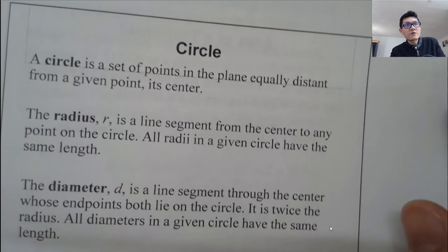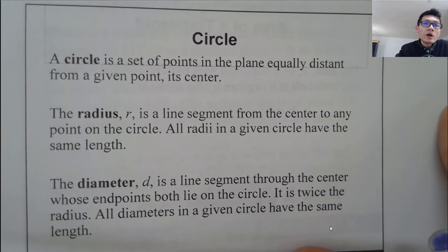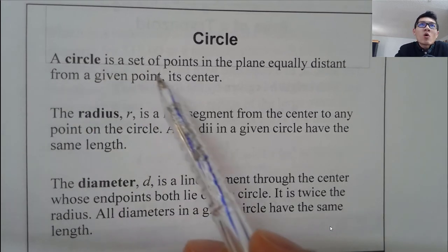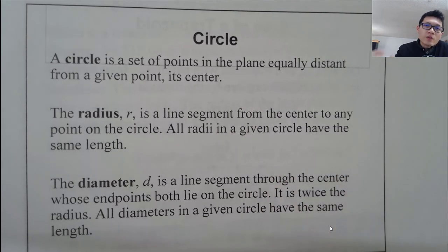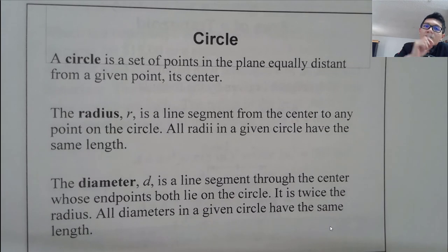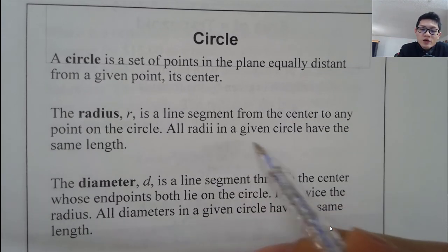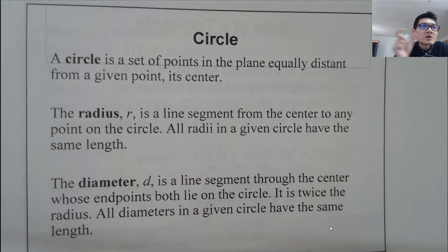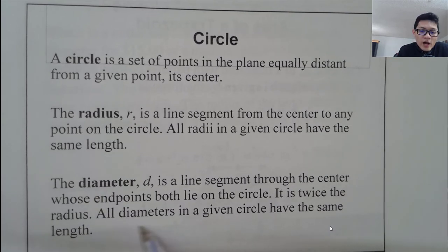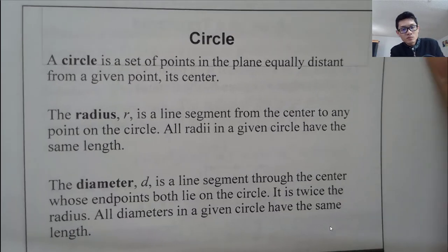The next topic is circles. A circle is a set of points in the plane equally distant from a given point called the center. The radius R is a line segment from the center to any point on the circle, and all radii in a given circle have the same length. The diameter D passes through the center with both endpoints on the circle, and D equals twice the radius.